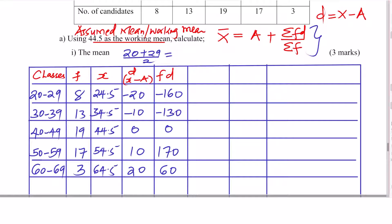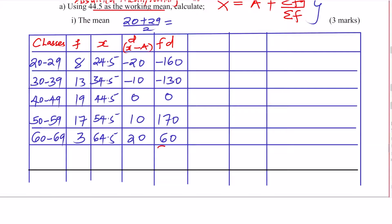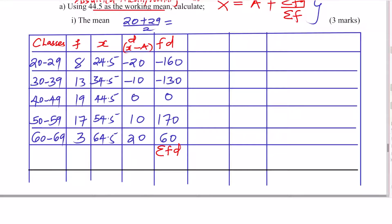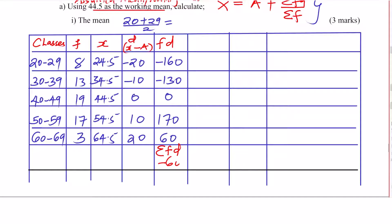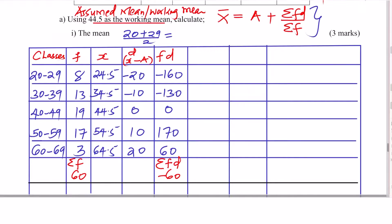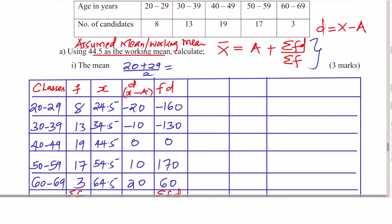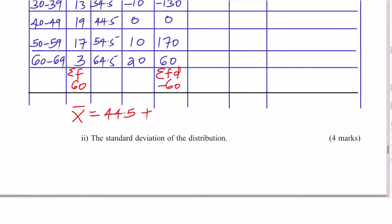From this formula we need to get the summation of FD. We add everything in the FD column: negative 160 plus negative 130 plus 0 plus 170 plus 60. When you add everything there, you get negative 60. Summation of F is the total frequency: 8 plus 13 plus 19 plus 17 plus 3 gives 60.